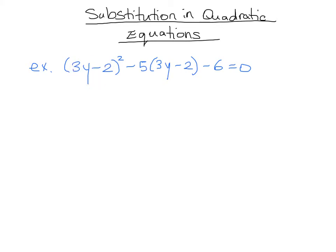So perhaps we can go ahead and call 3y minus 2 as x. We can substitute x for 3y minus 2. Let's say everywhere we see 3y minus 2, we're going to put an x. So we have it there and we have it there as well.